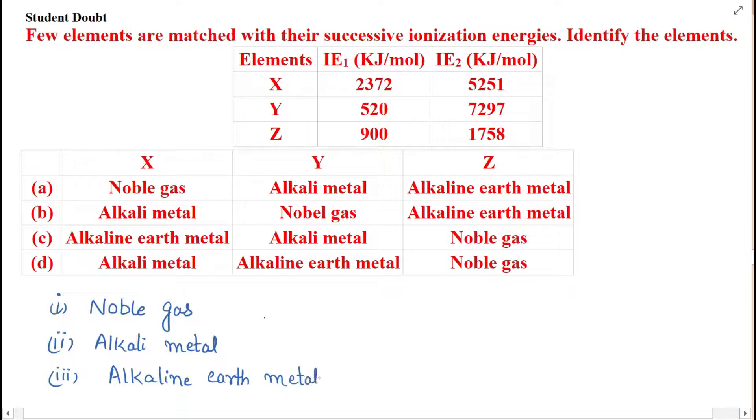Now we'll see the first element X. Here both the ionization energies are very high and we know that noble gases have very high ionization energies, so this may be noble gas.